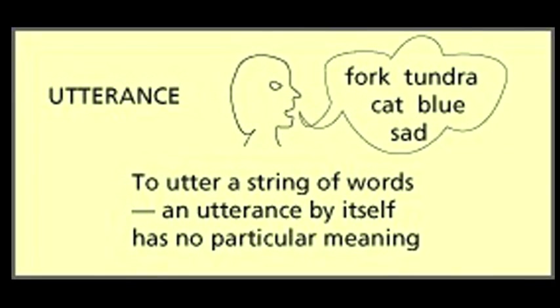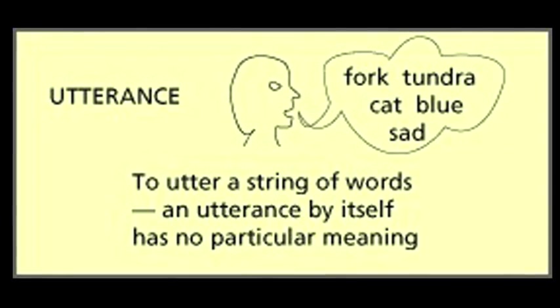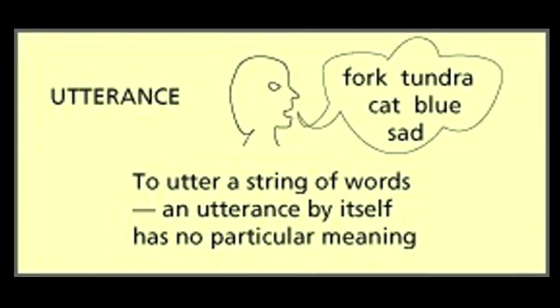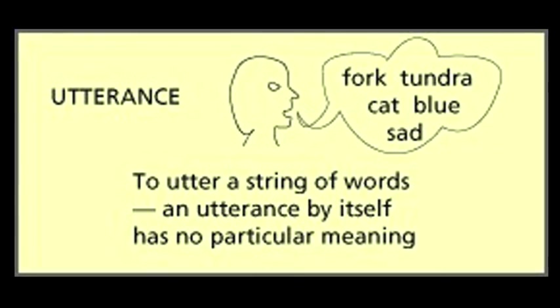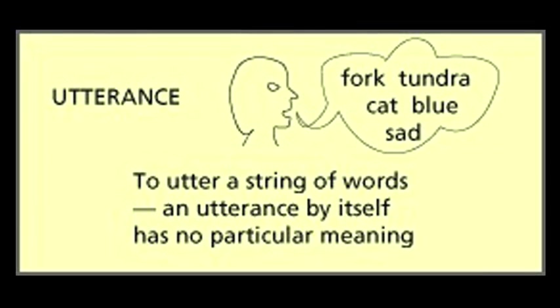J.L. Austin's first term is utterance. An utterance by itself has no particular meaning — it's merely a string of words.